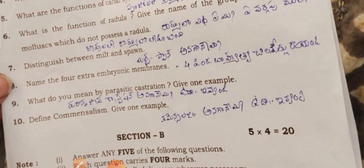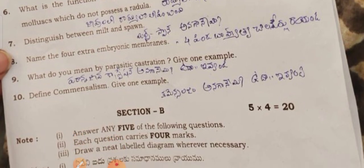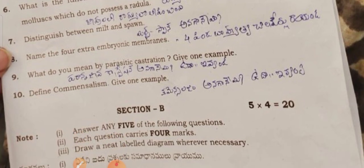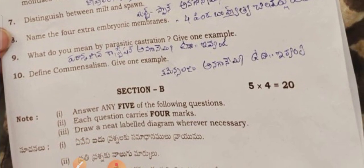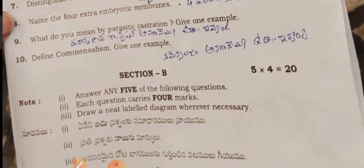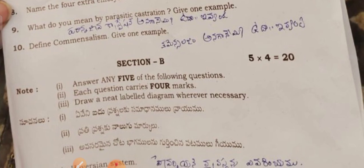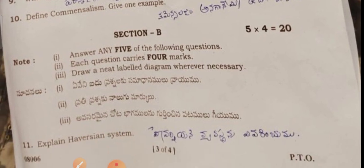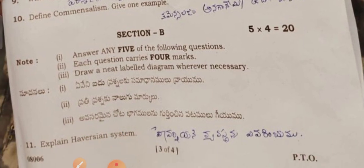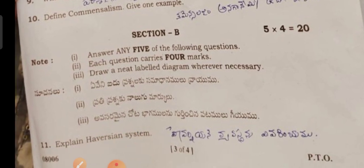Extra embryonic membranes. What do you mean by parasitic adaptation? Commensalism — give one example. Section B questions spread.